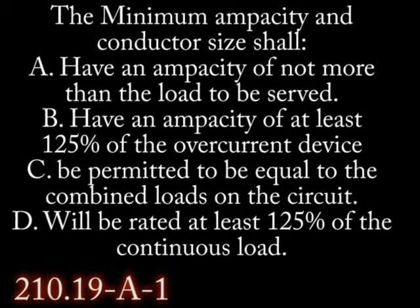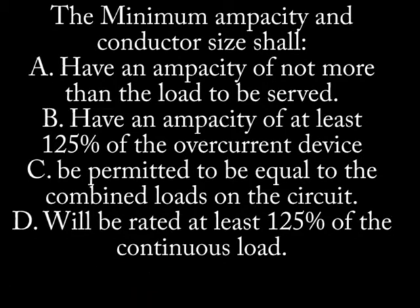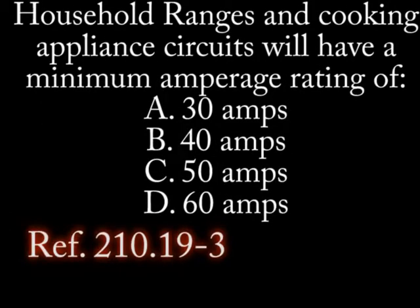Number 6. The minimum ampacity and conductor size shall: A. Have an ampacity of not more than the load to be served. B. Have an ampacity of at least 125% of the overcurrent device. C. Shall be permitted to be equal to the combined loads on the circuit. D. Will be rated at least 125% of the continuous load.